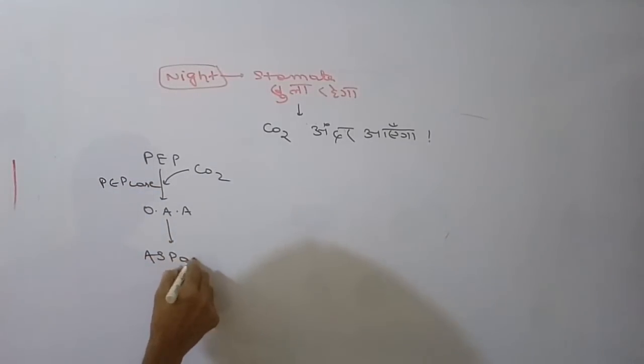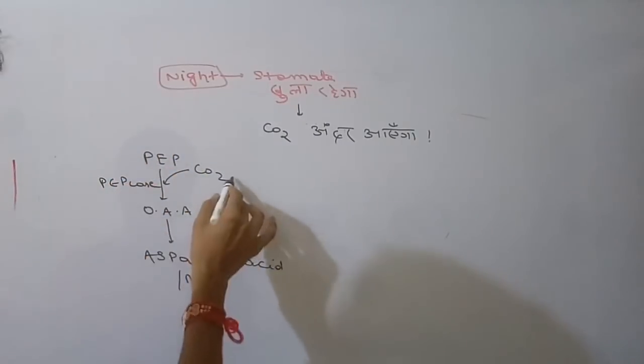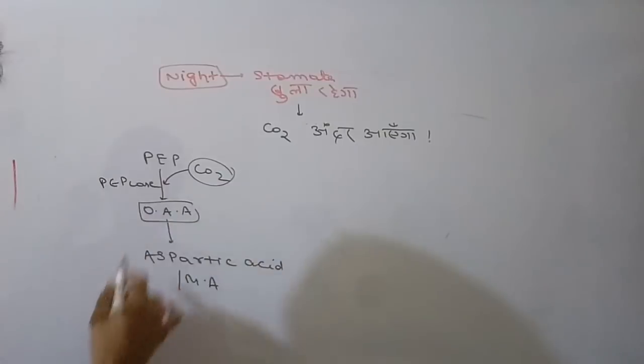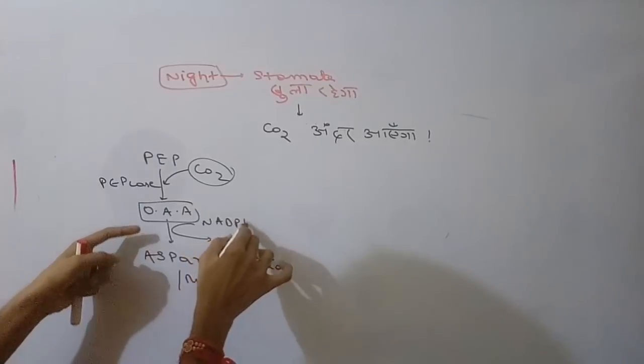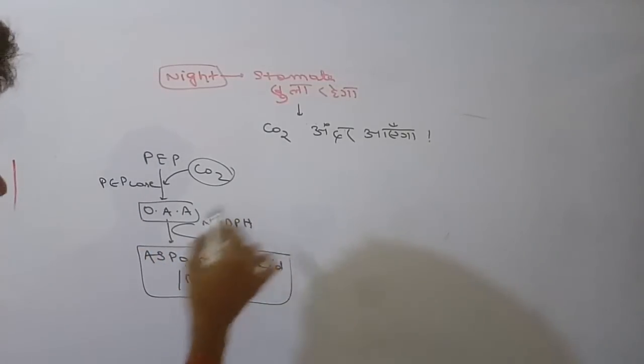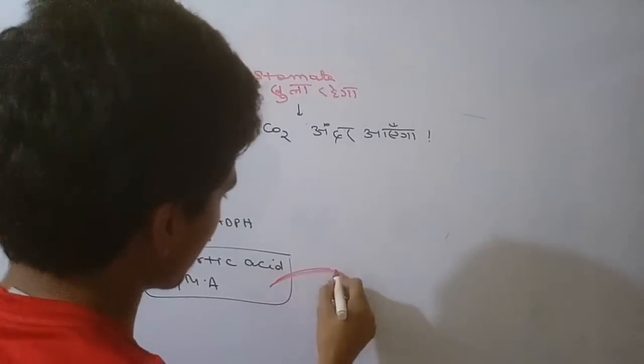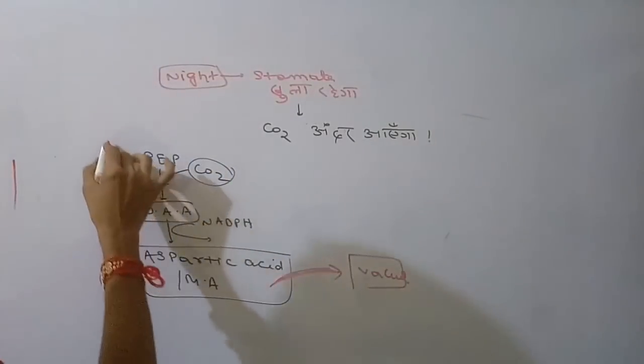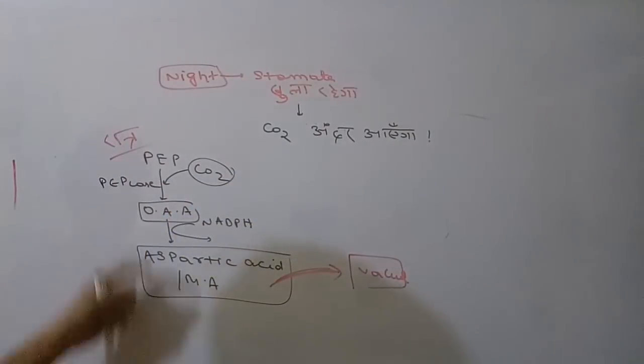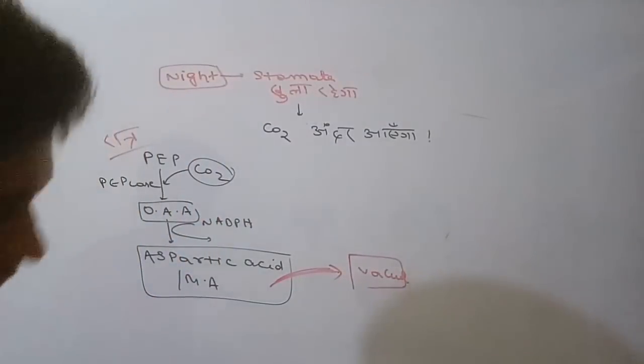In C4 cycle, oxaloacetic acid converts to aspartic acid or malic acid. Here, PEP accepts CO2 to form oxaloacetic acid. Then it converts to aspartic acid and malic acid. This aspartic acid and malic acid is stored in the vacuole. At night, aspartic acid and malic acid are stored in vacuole.